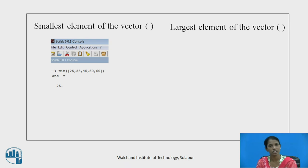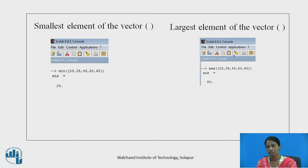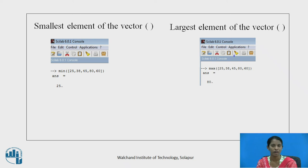In the same way, the largest element of a vector can also be found out using the function MAX. For vector [25, 38, 45, 80, 60], this function is used to find out the maximum element in the vector specified.